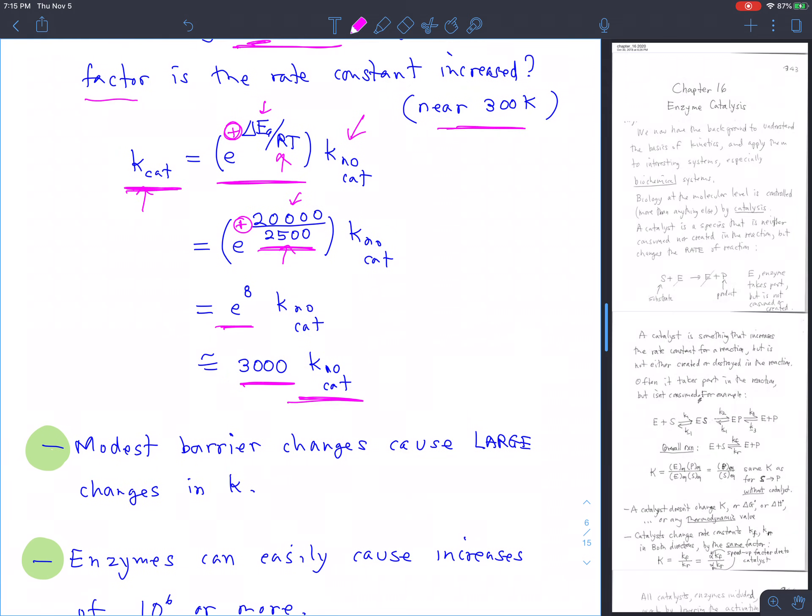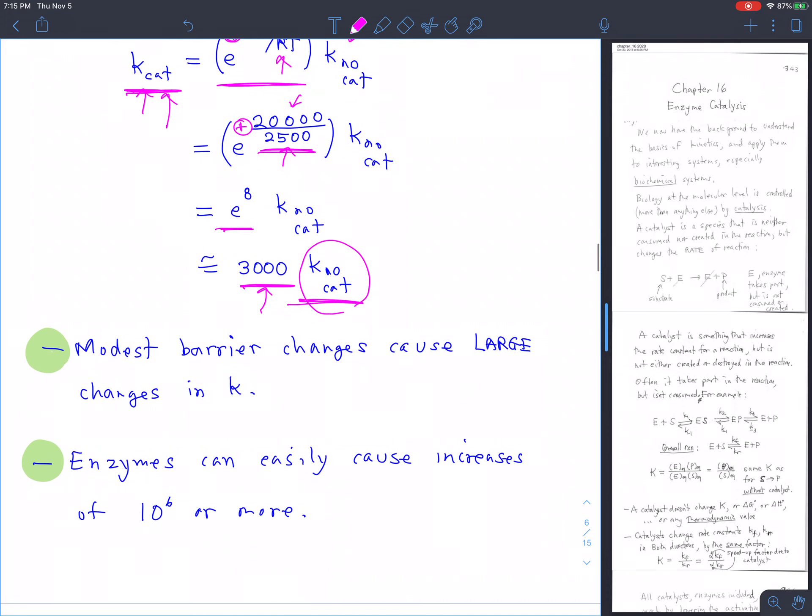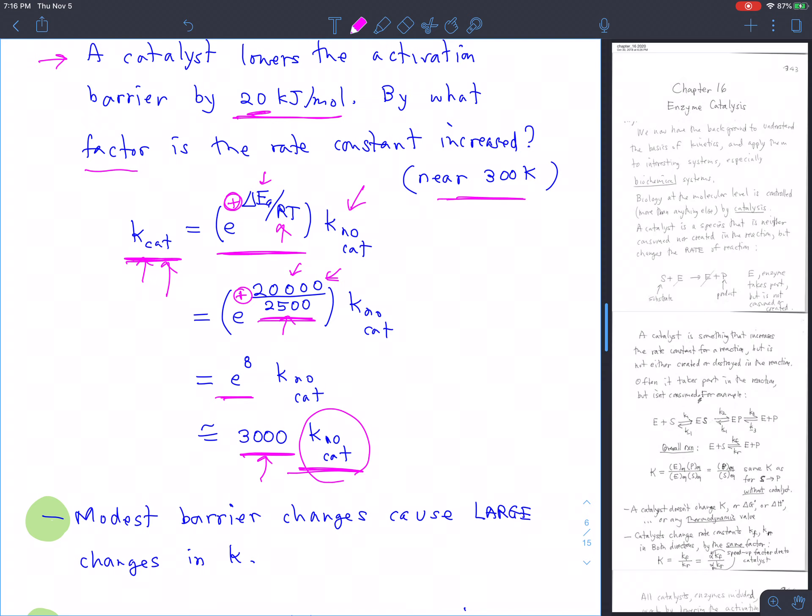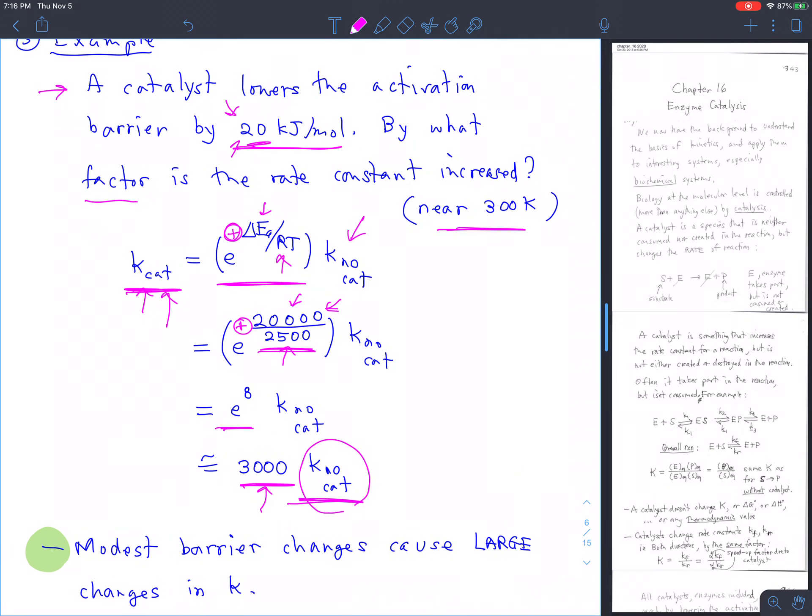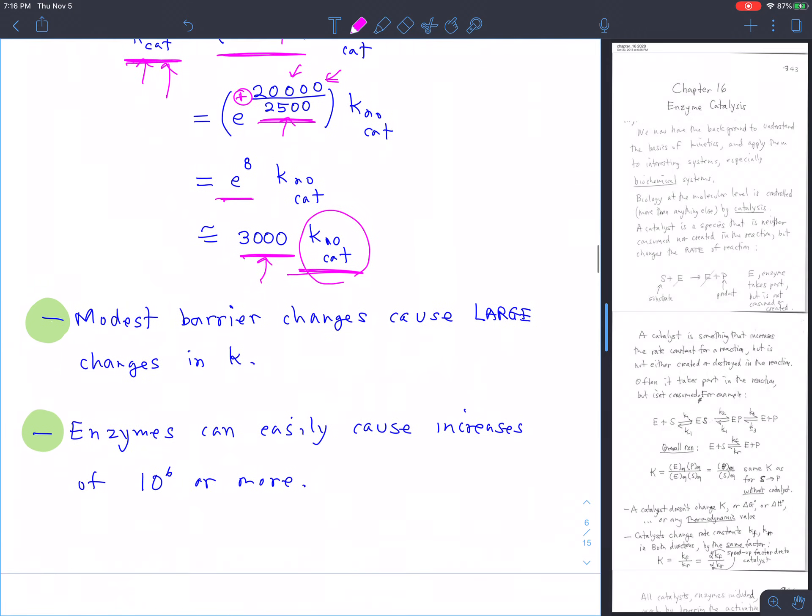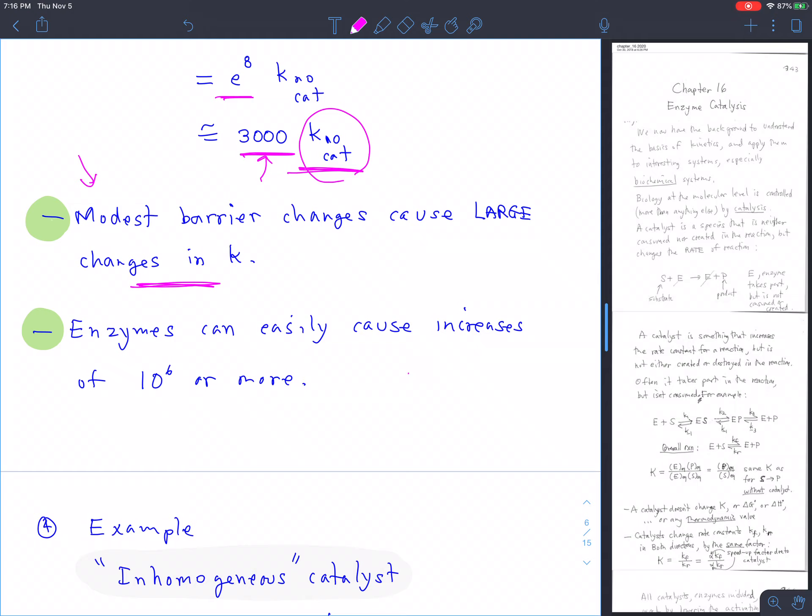That means that if the uncatalyzed rate constant is so slow as to be negligible, say if we're in a biological pathway, basically the pathway is off. Now you put the catalyst in and it's 3000 times bigger, suddenly it's full on. A factor of 3000 is easily enough to turn something from basically full off to something roaring full on. And this 20 kilojoules per mole, that's a pretty small change. Barrier heights are often 100 kilojoules per mole or more. So this would only be about a 20% change in the height of the barrier. And so relatively modest barrier changes can cause large changes in the rate constant. And as I said earlier, enzymes and other catalysts can easily cause increases of a million or even more in the rate of reaction. All right, we will stop there.